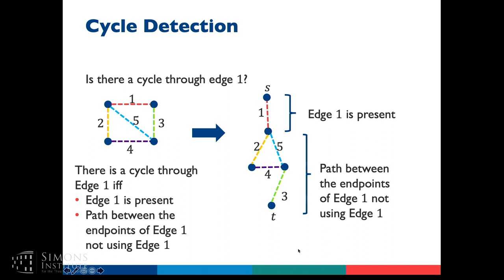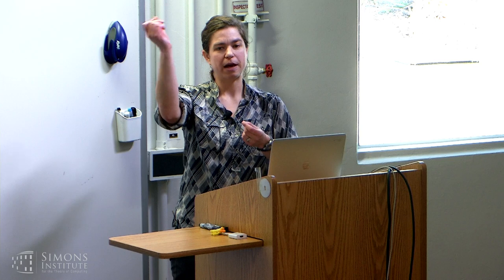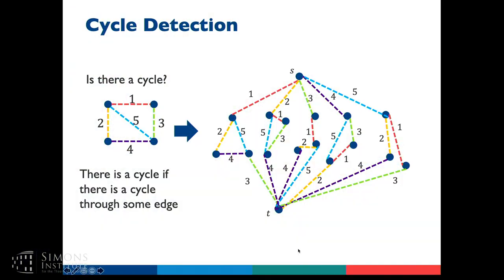If we want to ask whether there's a cycle at all, there's a cycle if there's a cycle through edge one OR edge two OR edge three OR edge four. When we want to take the OR of a bunch of problems in an ST connectivity approach, we attach graphs in parallel — if there's a path through any one of the parallel subgraphs, the whole connection holds. So there's a subgraph asking whether there's a cycle through edge one, another for edge two, and so on. There's going to be a cycle in our original graph if and only if there's a path in this converted ST connectivity problem.